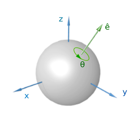In two dimensions, to carry out a rotation using a matrix, the point to be rotated counterclockwise is written as a column vector, then multiplied by a rotation matrix calculated from the angle theta: x' = cos θ · x − sin θ · y, y' = sin θ · x + cos θ · y.